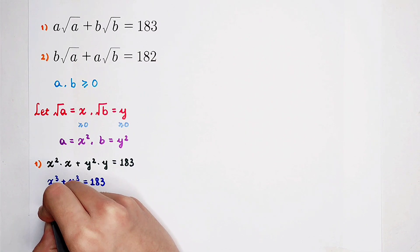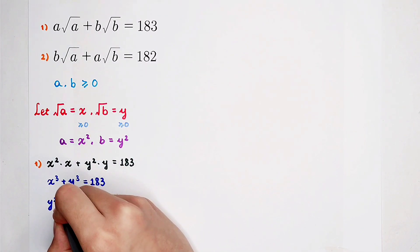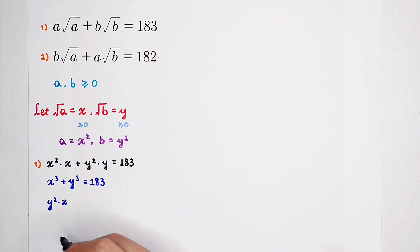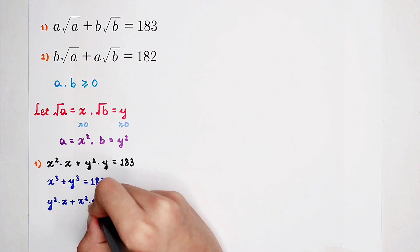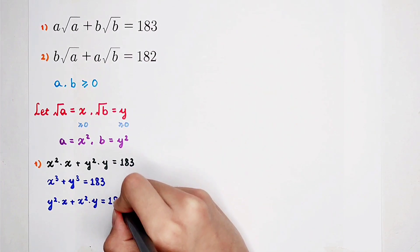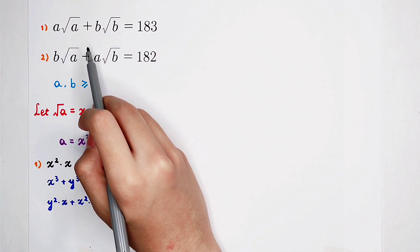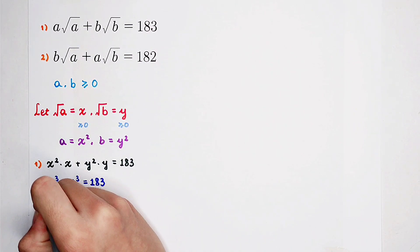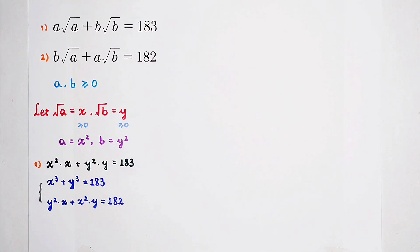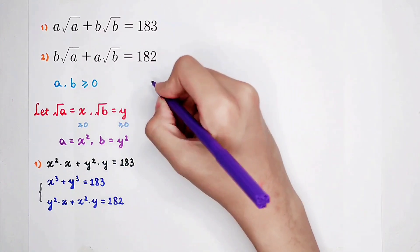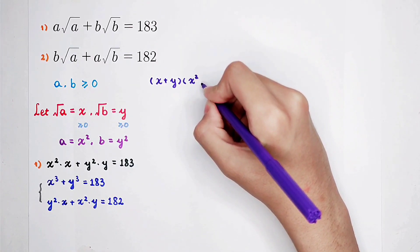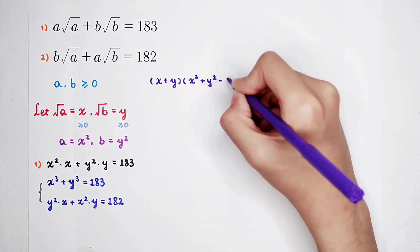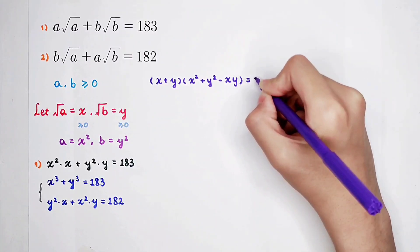For the second equation, substituting similarly: we get y squared times x plus x squared times y equals 182. The left-hand side of the first equation, x cubed plus y cubed, can be factorized as (x plus y) times (x squared minus xy plus y squared), which equals 183.